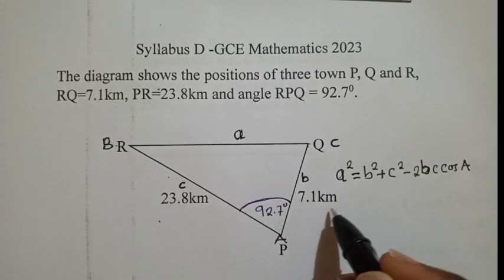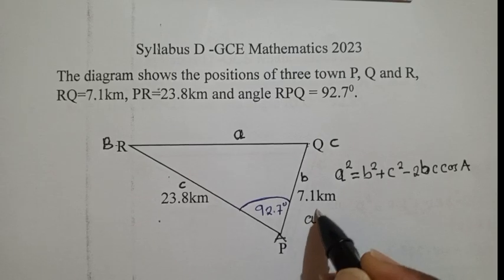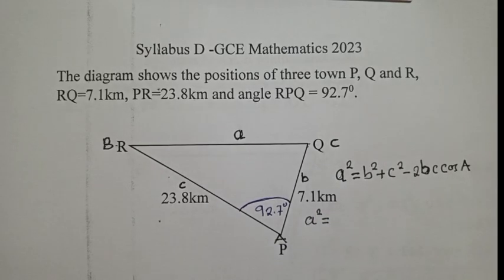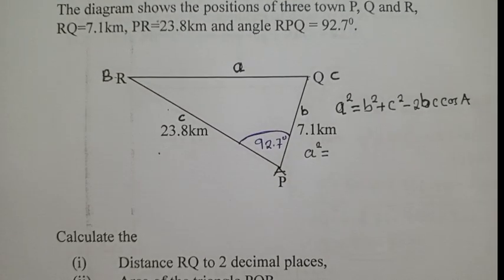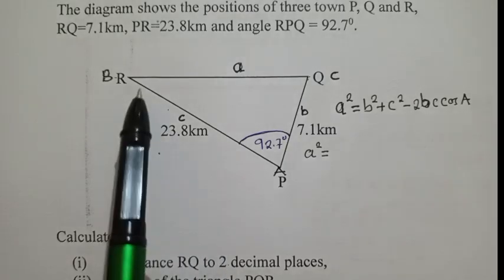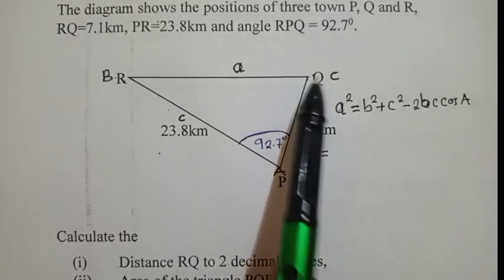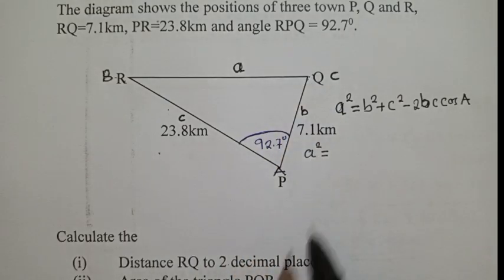So we are now good to go. We can now solve. We shall say a² is equal to. We are solving for a. Remember the question here. They have said we find what? Though I did not show you the question. But they are saying calculate the distance RQ to two decimal places. So if you check on your diagram, RQ is right here. This is our a. So we maintain a².